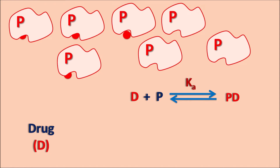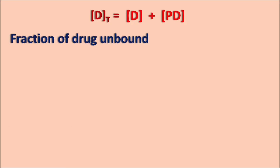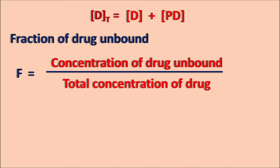The protein is also available as occupied as well as unoccupied. The total protein concentration Pt is equal to P — the unbound protein concentration — plus Pd, the protein concentration which is bound with the drug. Similarly, the total drug concentration Dt is equal to D plus Pd, where D is the free drug concentration and Pd is the bound drug concentration. Now we can define the fraction of the drug unbound, because the therapeutic activity mainly depends on the unbound drug.